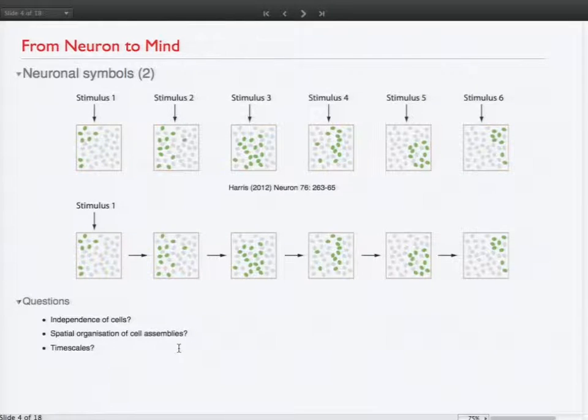Then, of course, the spatial organization of these co-active cell assemblies and the timescales on which they, the timescales that matter. And it's also clear in theory that the smaller the timescales, so the faster the symbols appear and are computed, the better it would be for the performance of the brain and animals or humans.